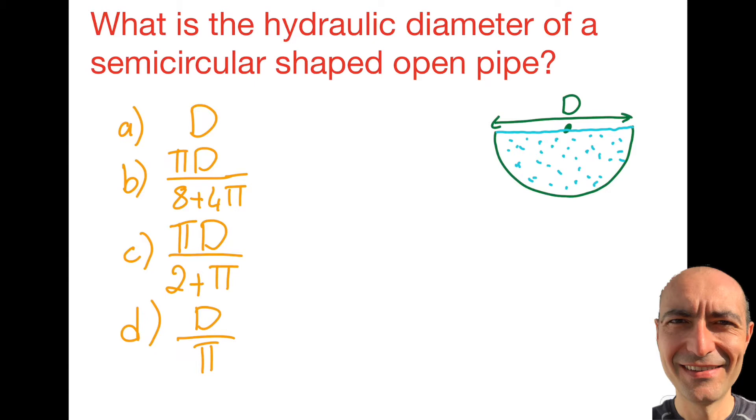In this case, what I give you is an open channel. You see I have a semicircular shape that is open to the atmosphere over here, and there's flow—the fluid is flowing over here.